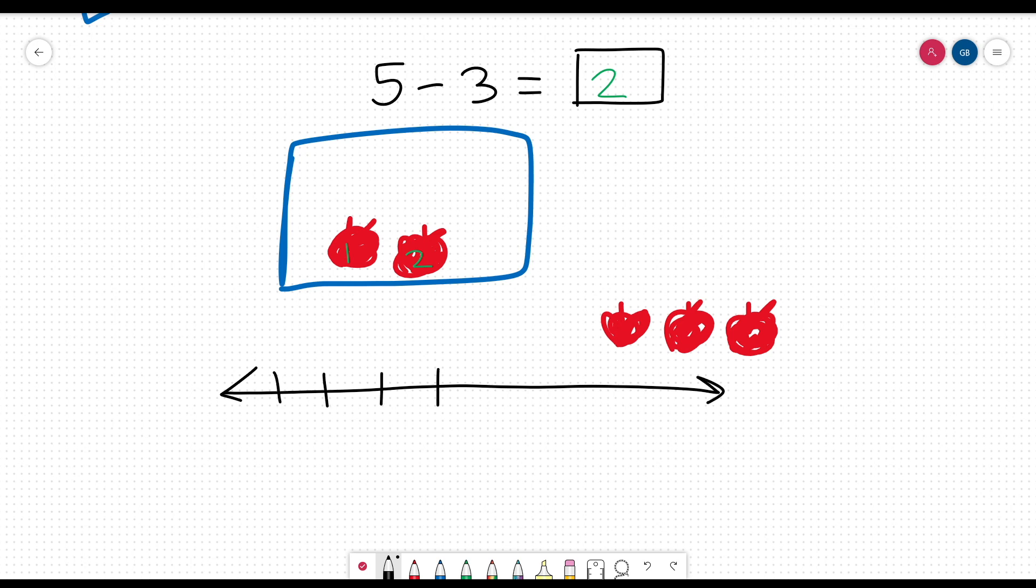Now let's try to solve the same problem using the number line. Because 5 is the first number here, mark 5 on your number line. The second number in the problem is the 3, so we will move to the left by 3 dashes on the number line.